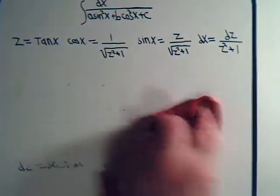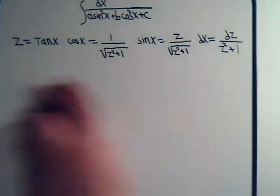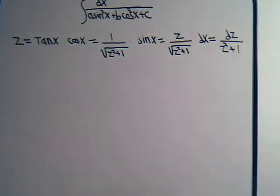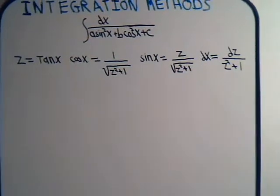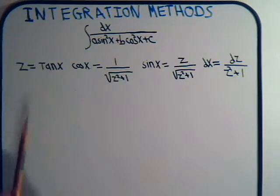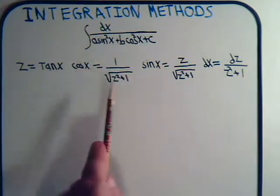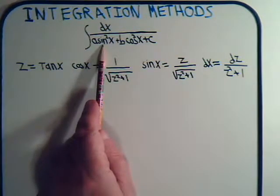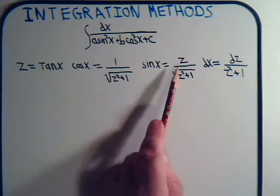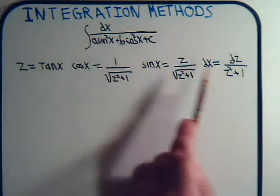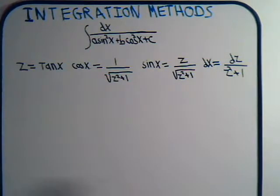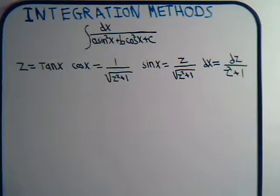So again, when we make the substitution let z = tan(x): the cosine of x is expressed in terms of z, the sine of x is expressed in terms of z, and dx is now expressed in terms of z. The best way to get a feel for it is just to work some examples.